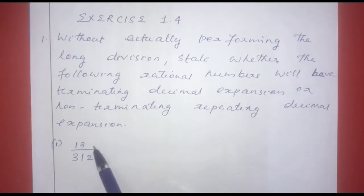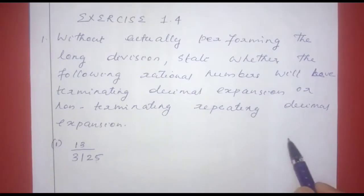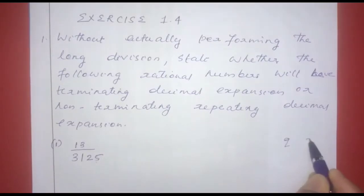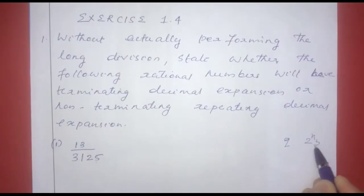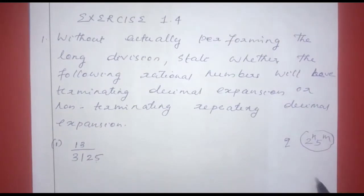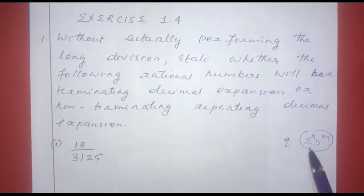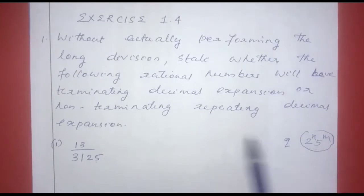For rational numbers, we have to check the denominator Q. If the denominator is of the form 2 raised to n into 5 raised to m, the decimal expansion is terminating. Otherwise, it is non-terminating repeating.